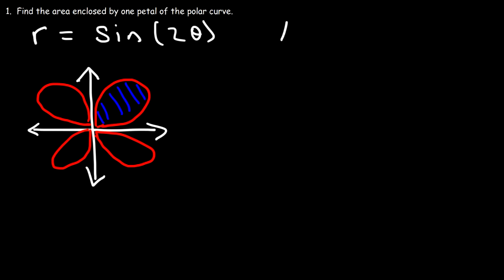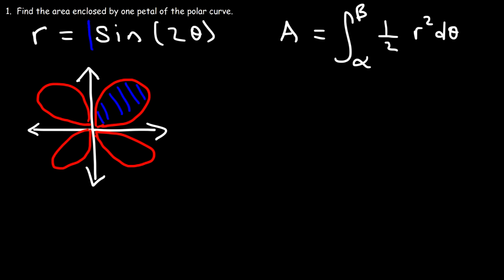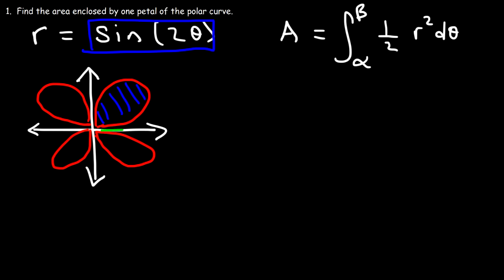There's a formula that we need to use. The area is going to be the definite integral from alpha to beta, one-half r squared d theta. And so we have a formula for r — it's sine 2 theta. Now what is alpha and what is beta? This particular petal is bounded by the angles theta equals 0 and also the angle at 90 degrees or pi over 2.